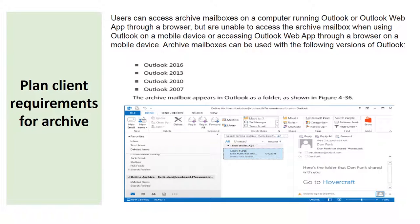Plan client requirements for archive. Users can access archive mailboxes on a computer running Outlook or Outlook Web App through a browser, but they are unable to access the archive mailbox when using Outlook on a mobile device or accessing Outlook Web App through a browser on a mobile device. Archive mailboxes can be used with any version of Outlook from Outlook 2007, and the archive mailbox appears in Outlook as a folder named after the mailbox.